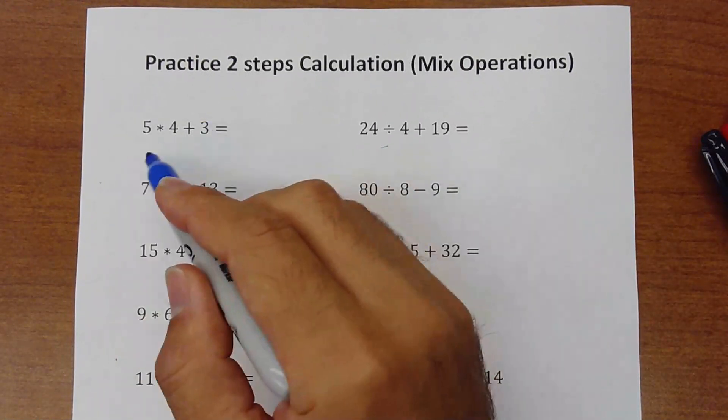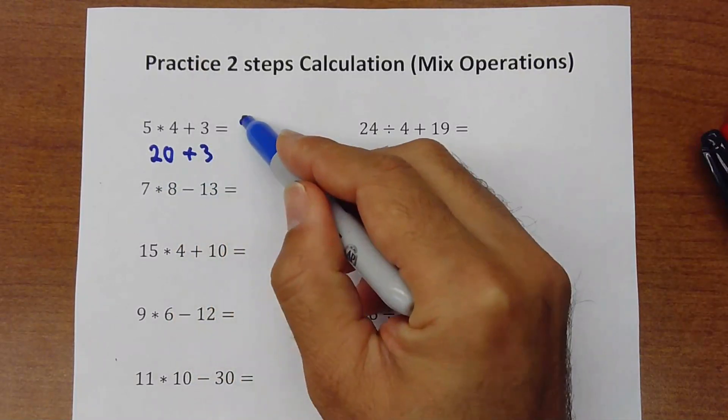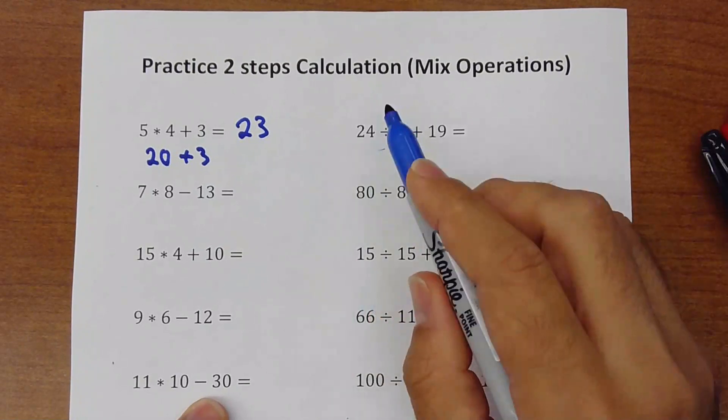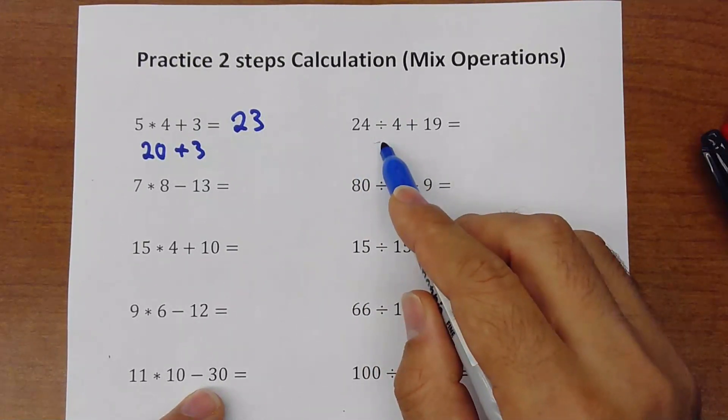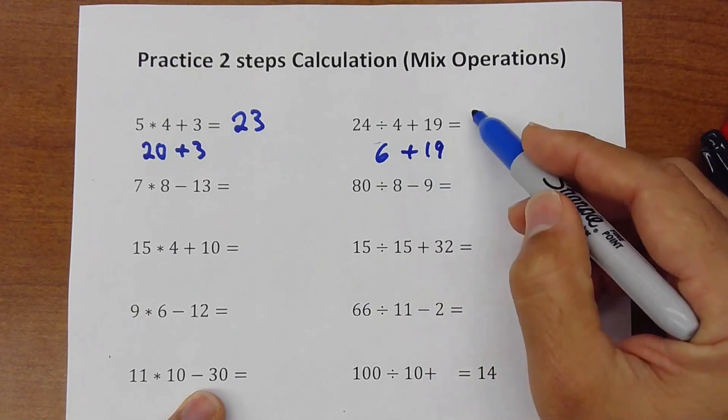So 5 times 4 is 20, then we do 20 plus 3 and the answer will be 23. Okay, here 24 divided by 4 is 6, then 6 plus 19 that's equal 25.